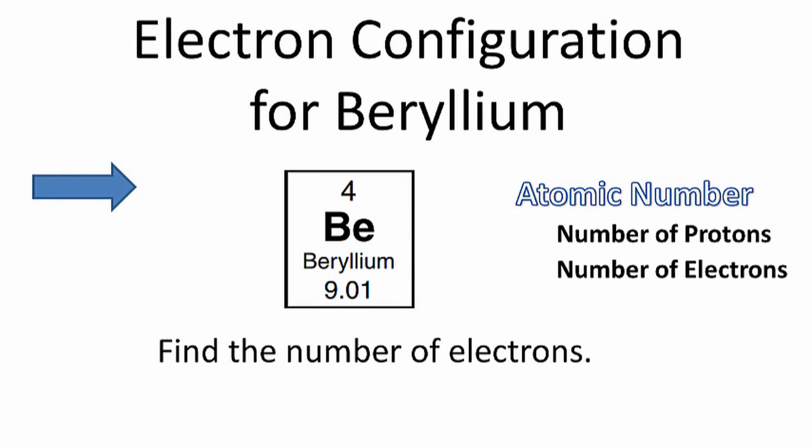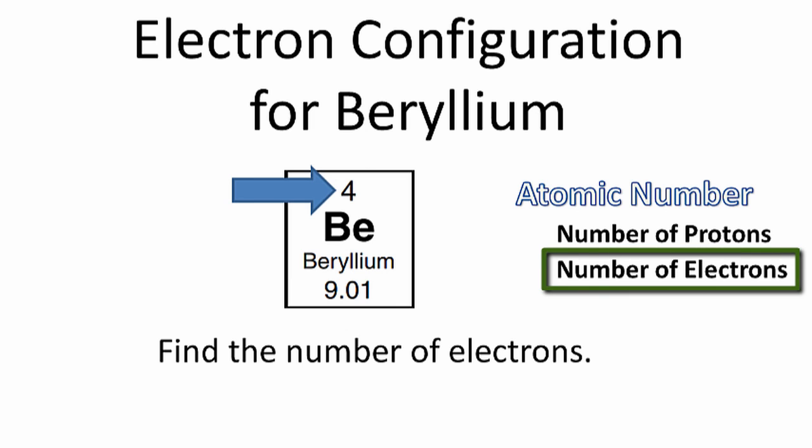To find the electron configuration for beryllium, we'll start on the periodic table, where we'll look at the atomic number. That's the number above the element symbol, and it represents the number of protons. It also tells us the number of electrons.